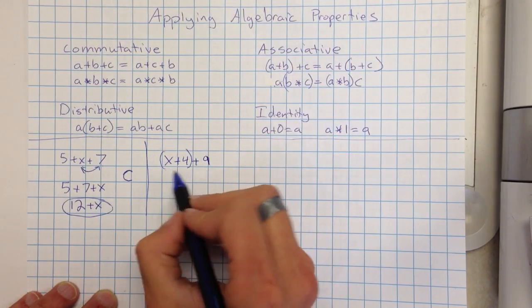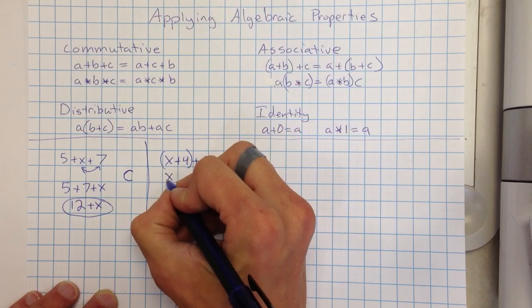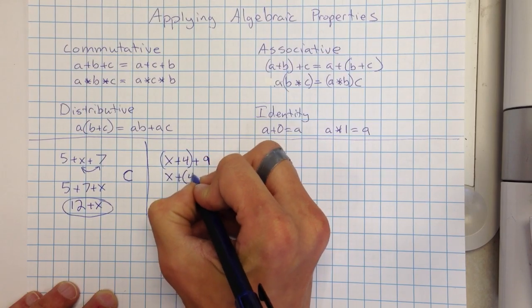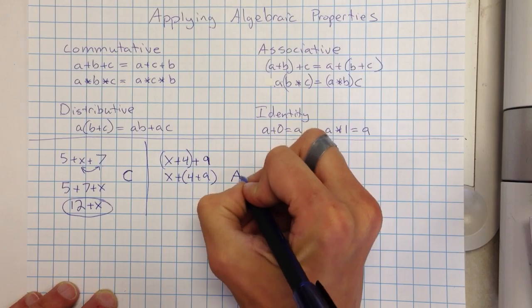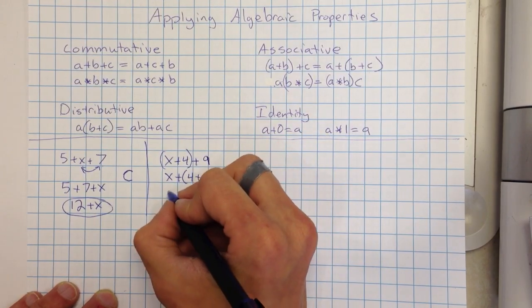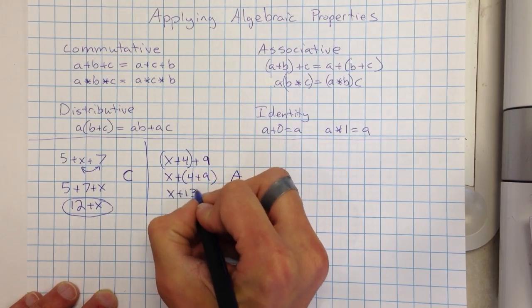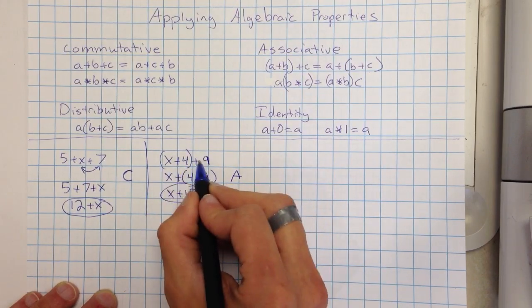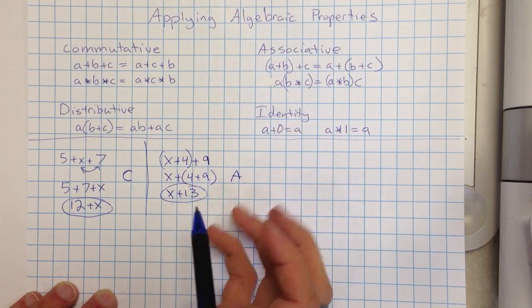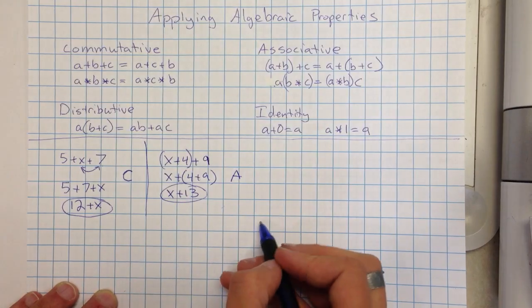I could rewrite this as X plus parentheses 4 plus 9. That's the associative property, so I'm going to put an A right there. And that gives me X plus 13. So again, all I've done is I've taken these numbers and I've turned them into a little bit of a simpler form, combined any numbers that I can.